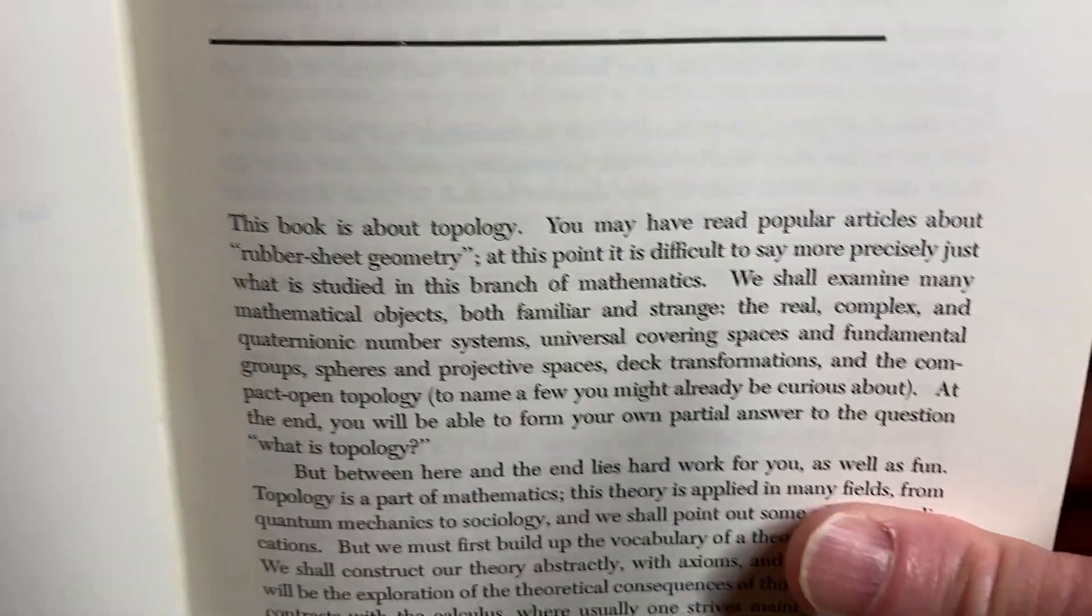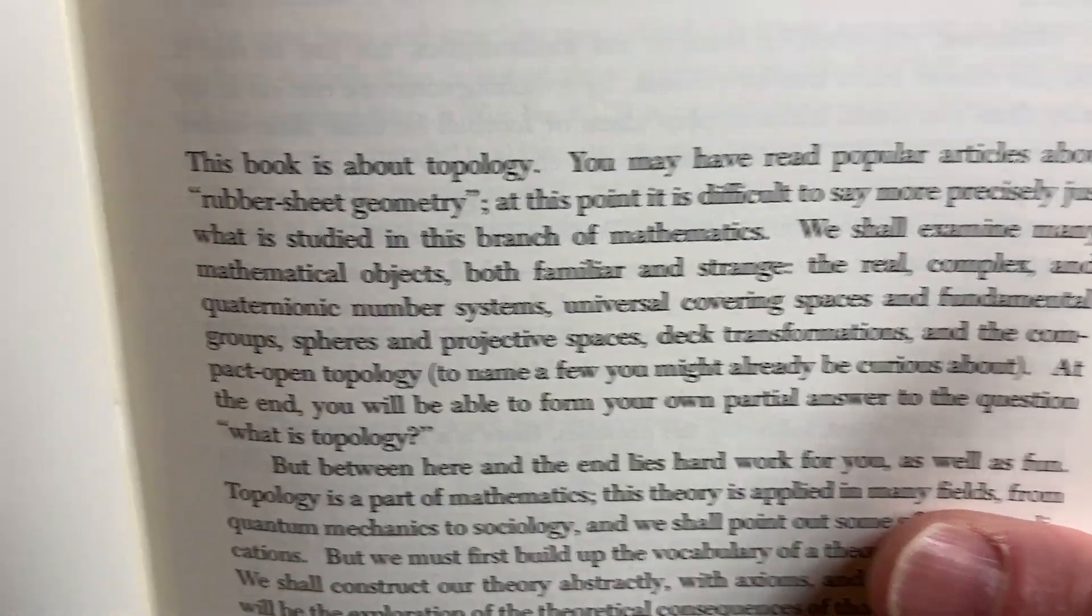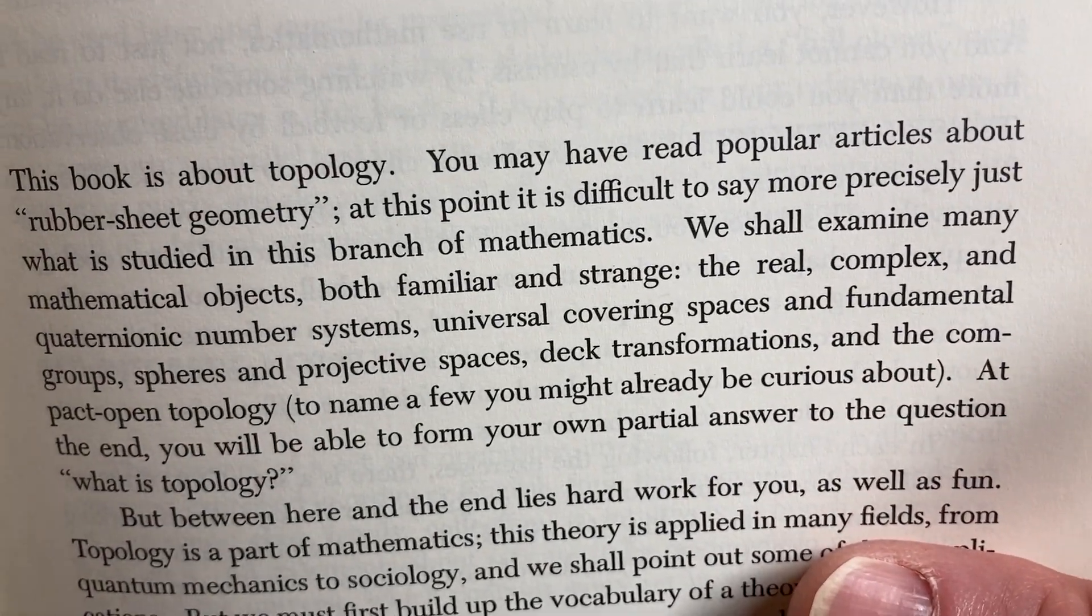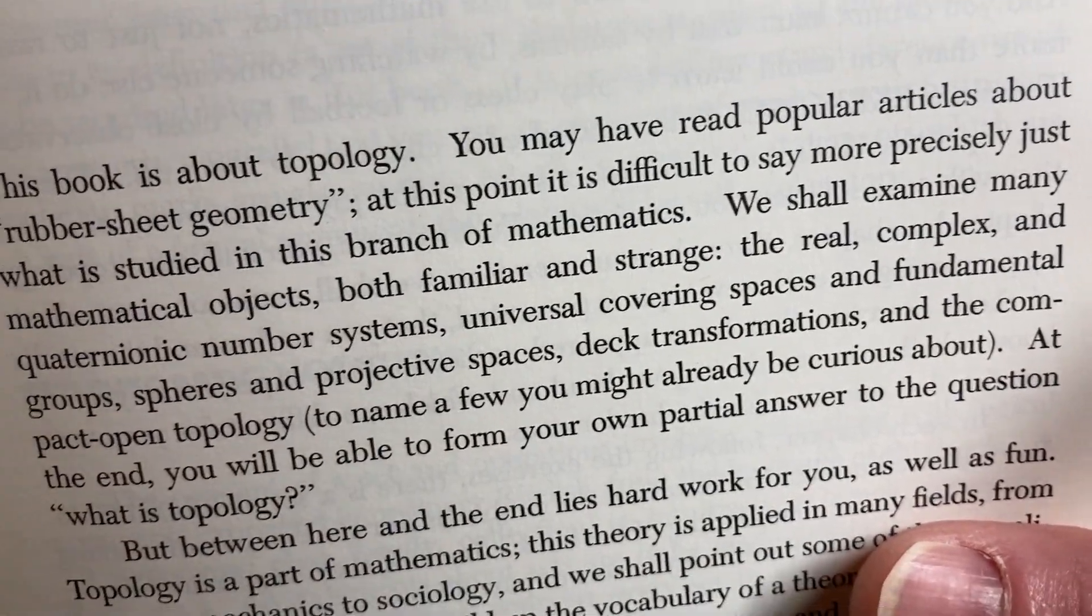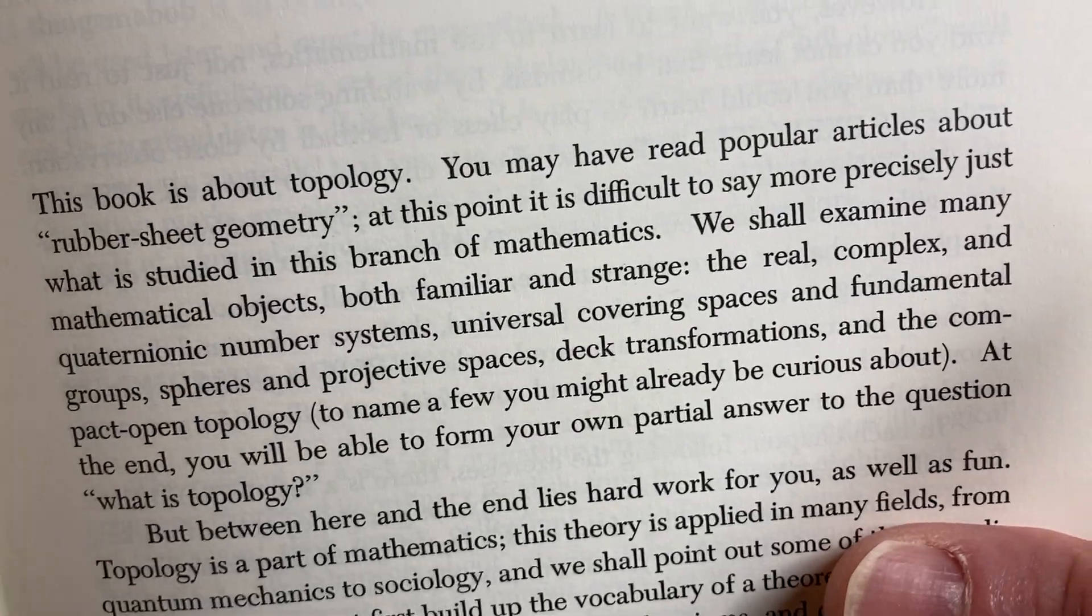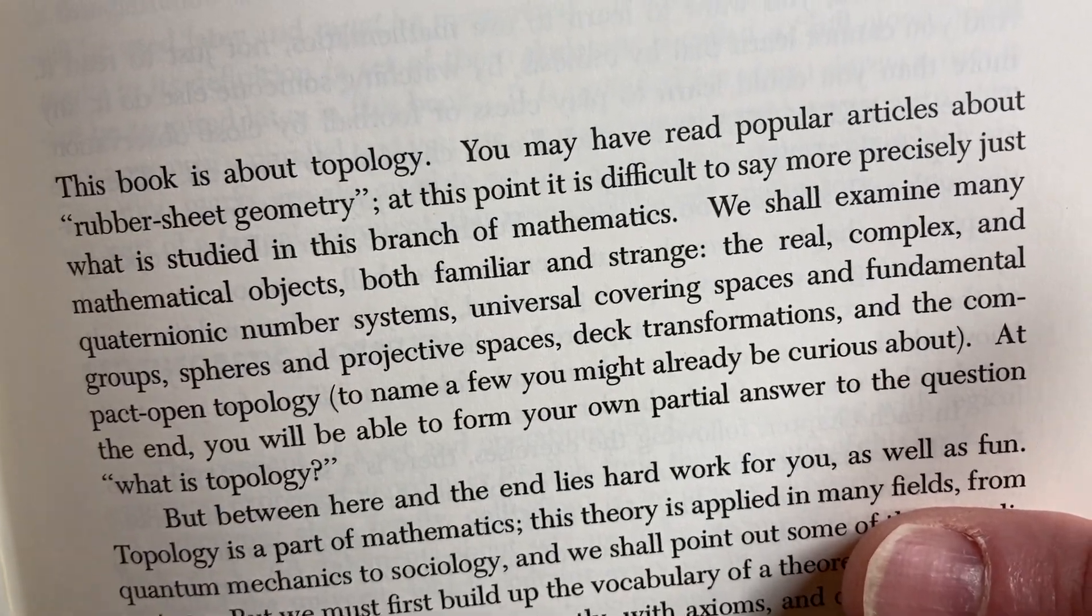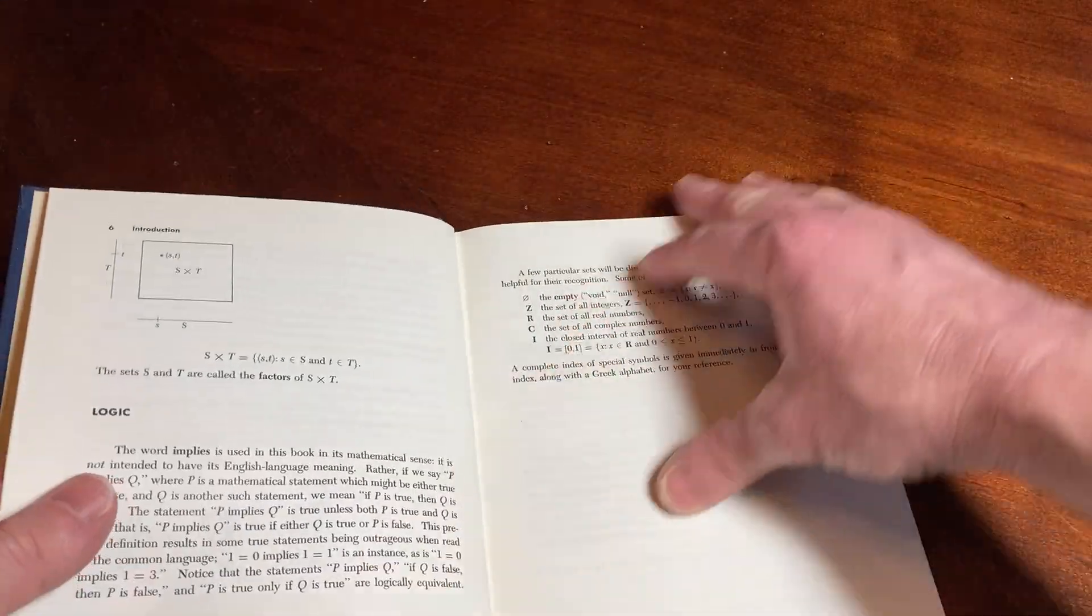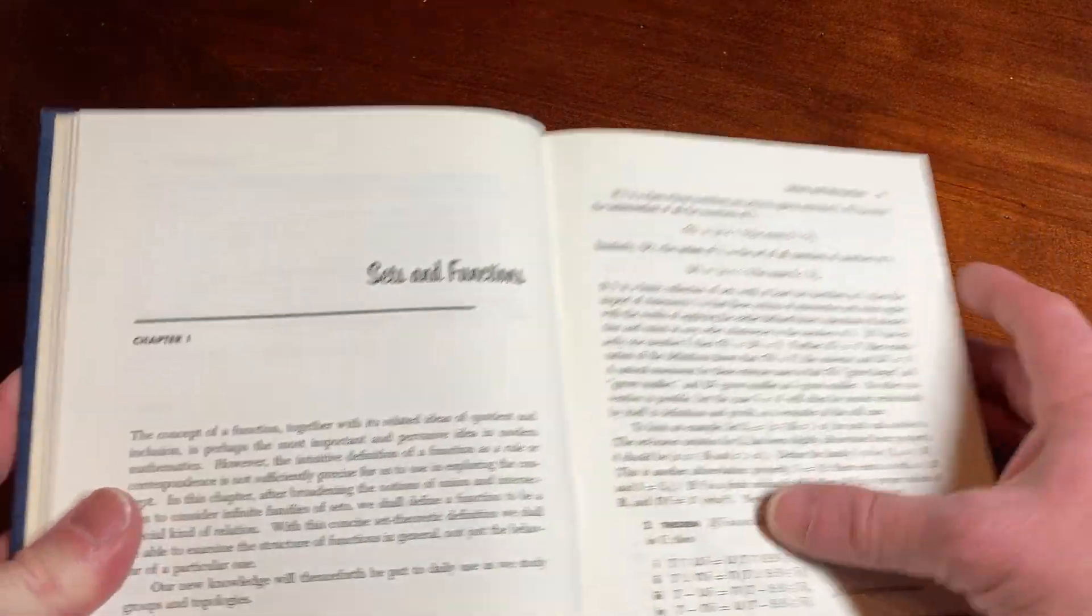This book is about topology. You may have read popular articles about rubber sheet geometry. At this point, it is difficult to say more precisely just what is studied in this branch of mathematics. We shall examine many mathematical objects, both familiar and strange, the real, complex, and quaternionic number systems.